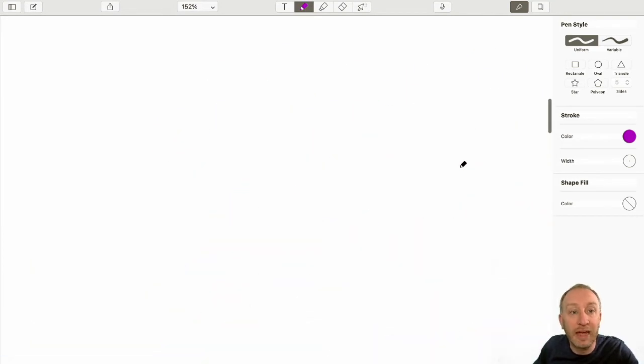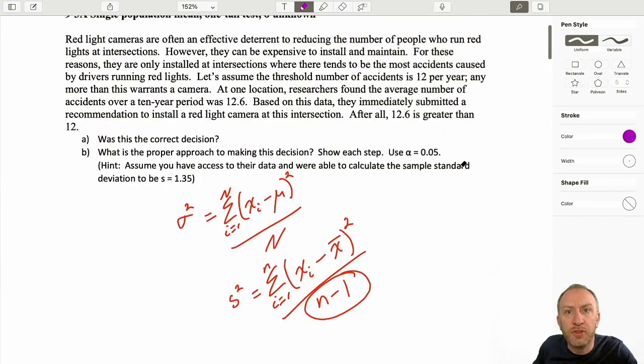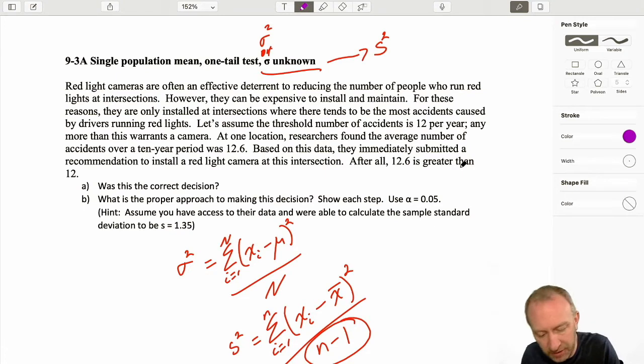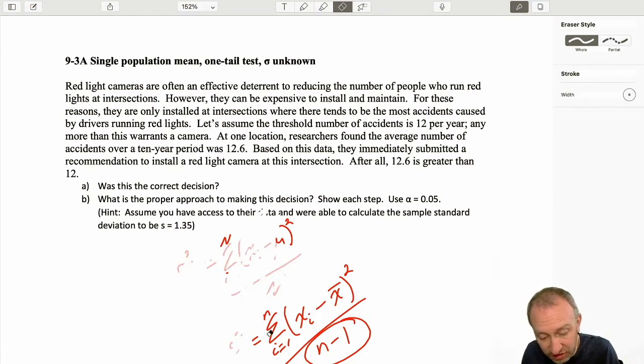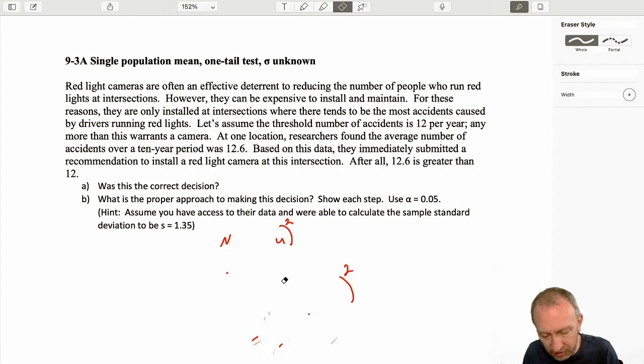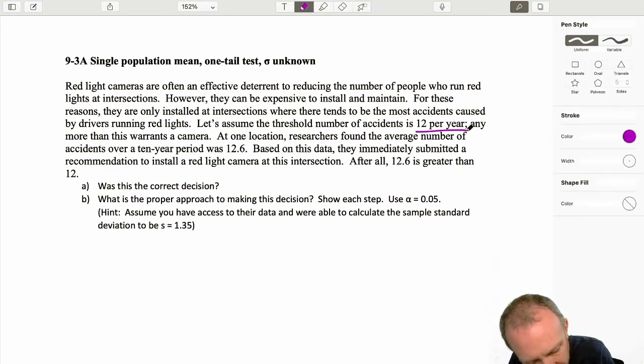Let's go back up now and look at our particular problem here. So we're looking at the installation of red light cameras. And red light cameras, they're an effective deterrent in reducing the number of people who run red lights. But of course, they're expensive to install, so we only want to install them at intersections where there tends to be a lot of accidents caused by people running red lights. So let's assume we have a threshold number of accidents at 12 per year. Any more than this warrants a camera. There's our clue for what kind of testing we might want to do. Any more than this is where we're going to put a camera.